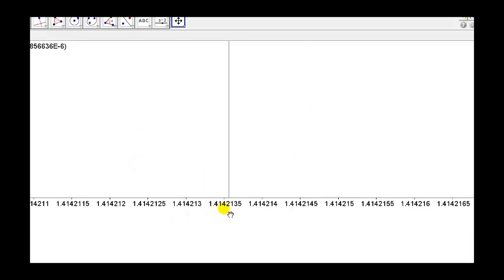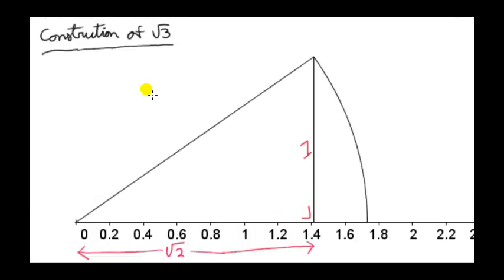Here is a closer look at this number. You can see it's between 1.4142135 and 1.414214. Let's look at the construction of the square root of 3. We use our previous construction, where we showed root 2 on our number line.